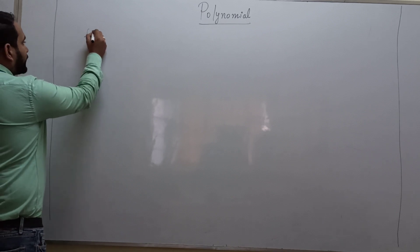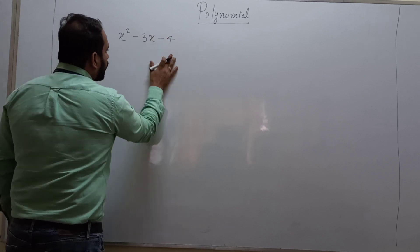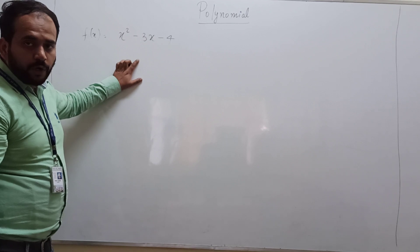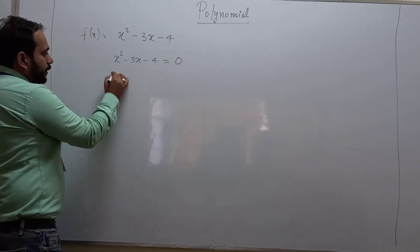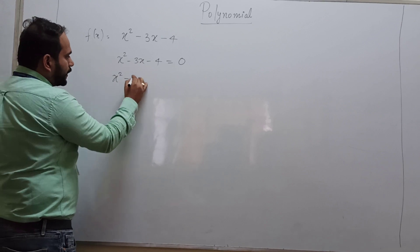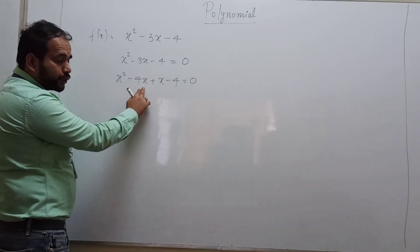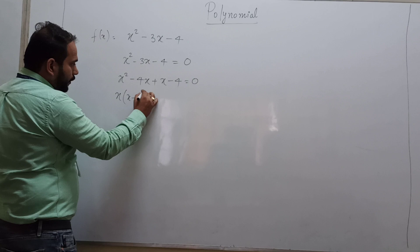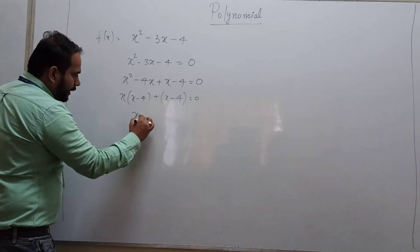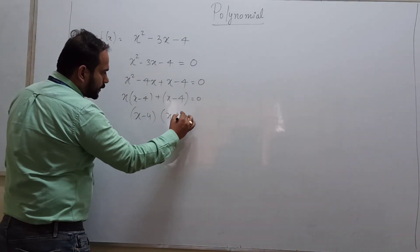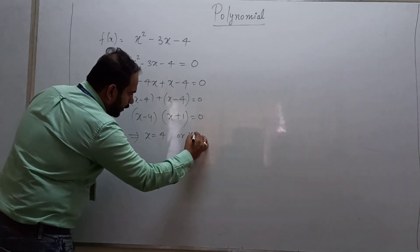For example, our polynomial f(x) is x squared minus 3x minus 4. If I tell you to find the zeros of this polynomial, you set x squared minus 3x minus 4 equal to 0. By applying middle-term splitting we get x squared minus 4x plus x minus 4 equals 0. Taking x common from the first two terms gives x(x minus 4), and from the last two terms plus 1(x minus 4) equals 0.